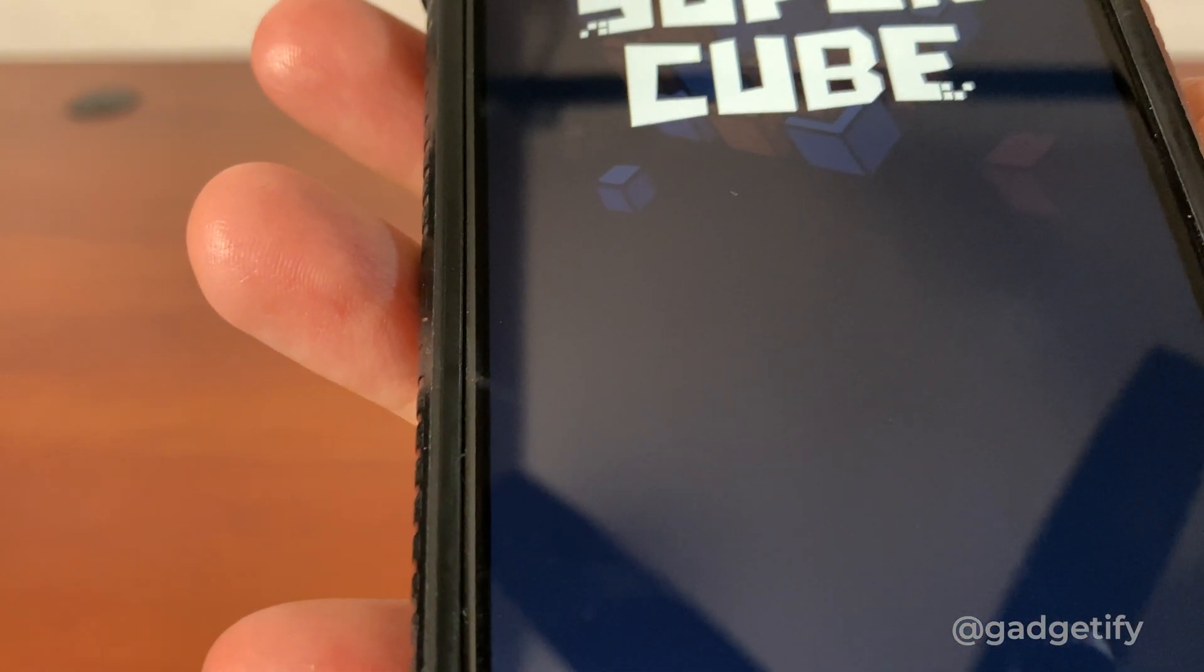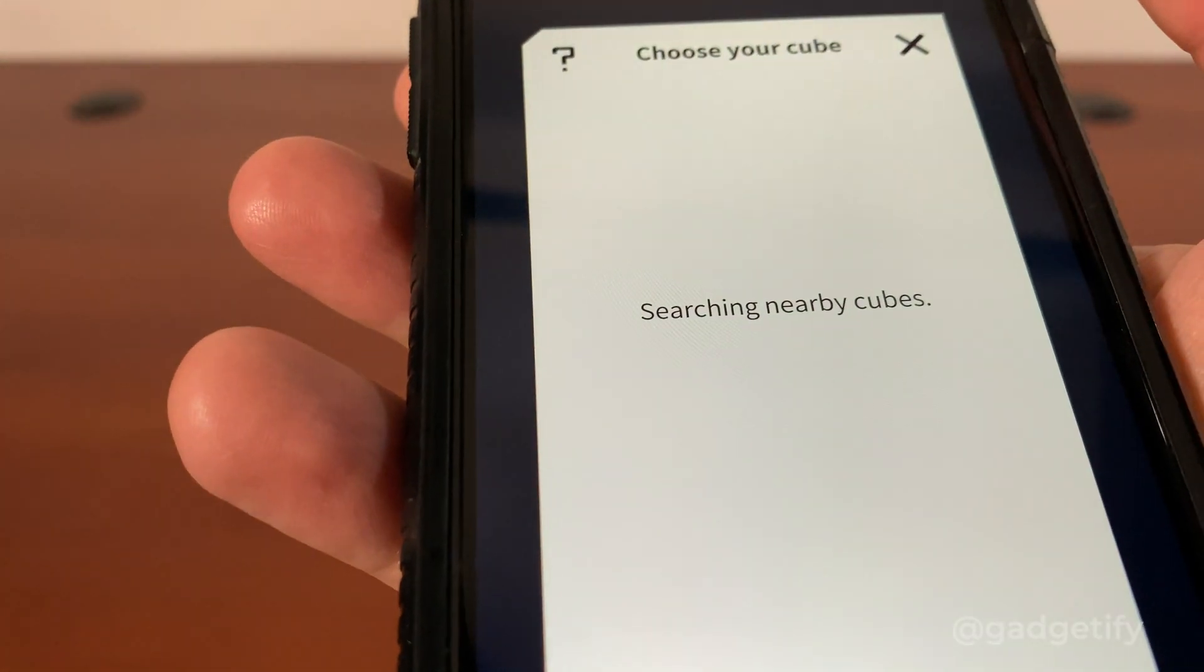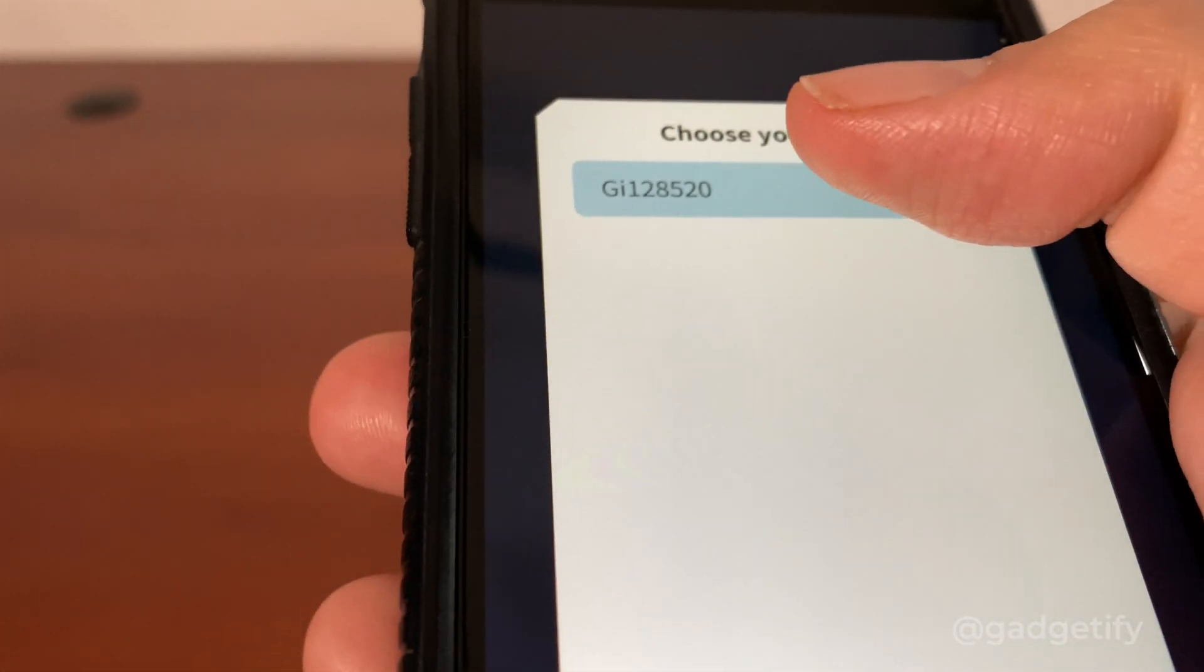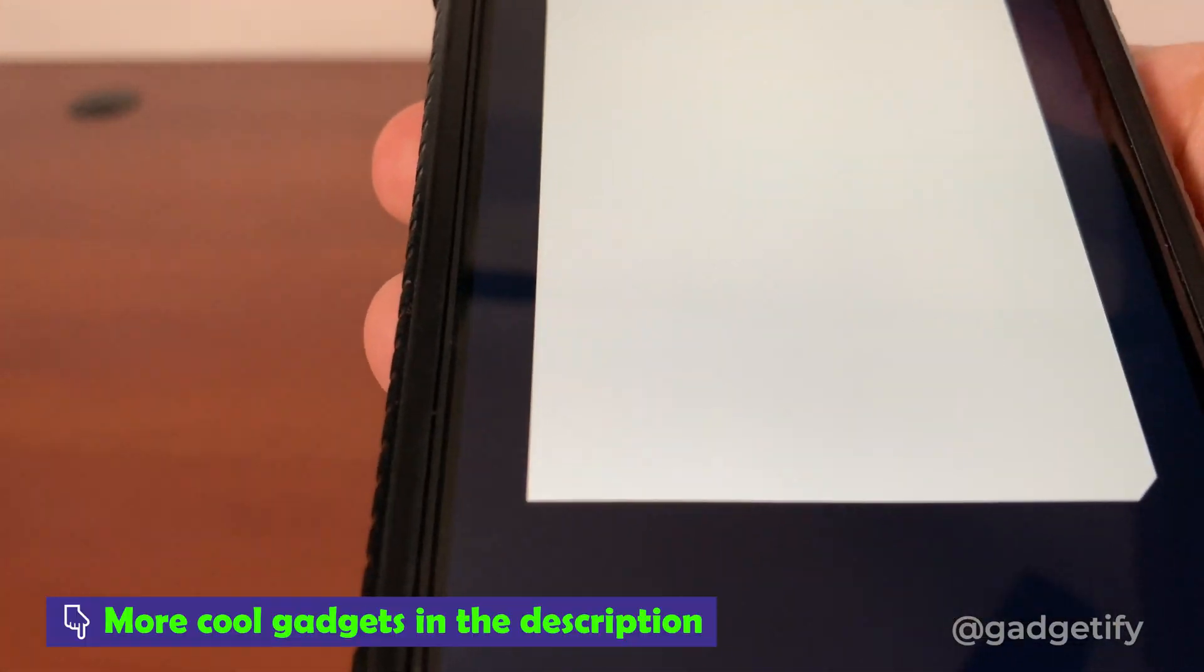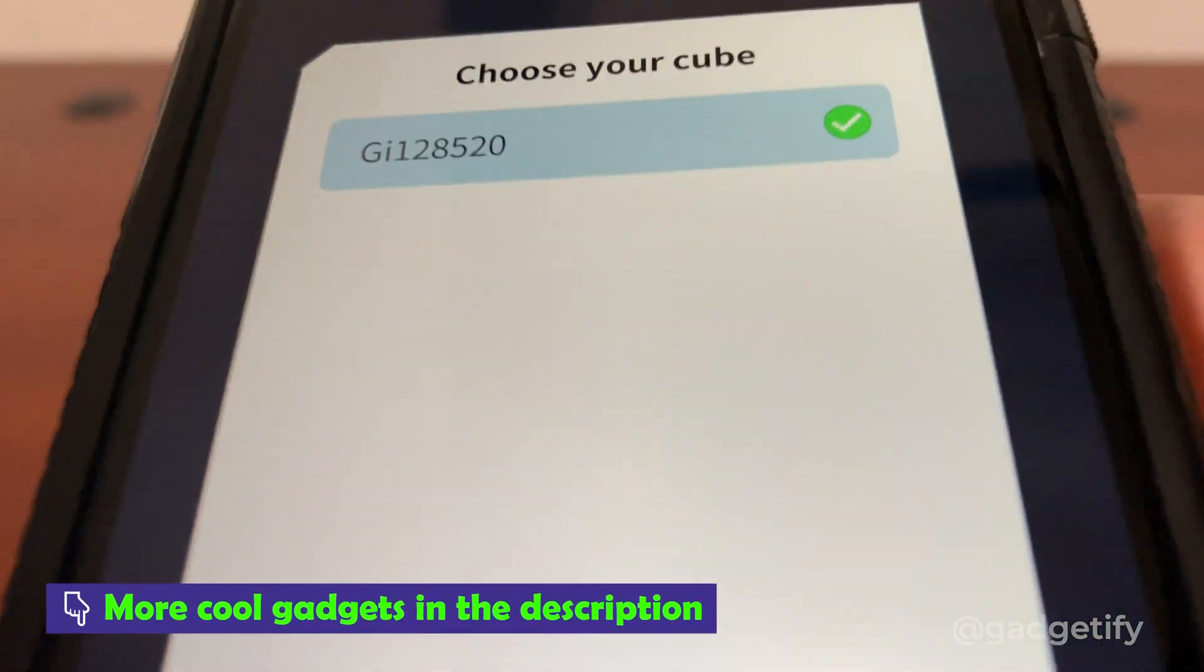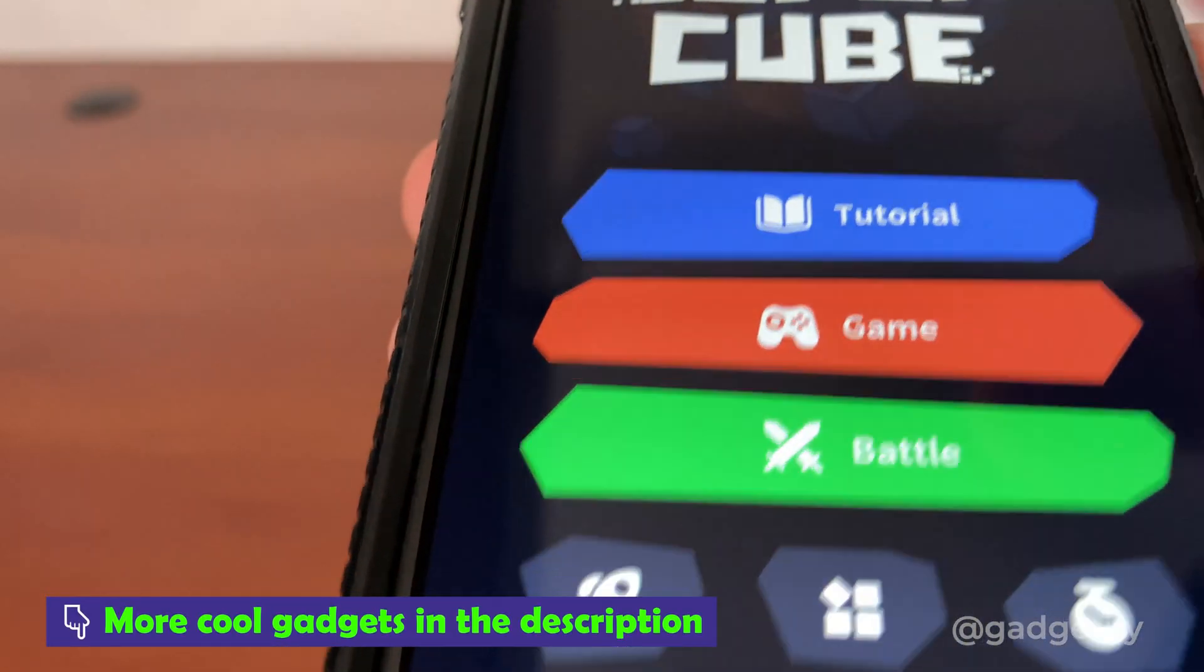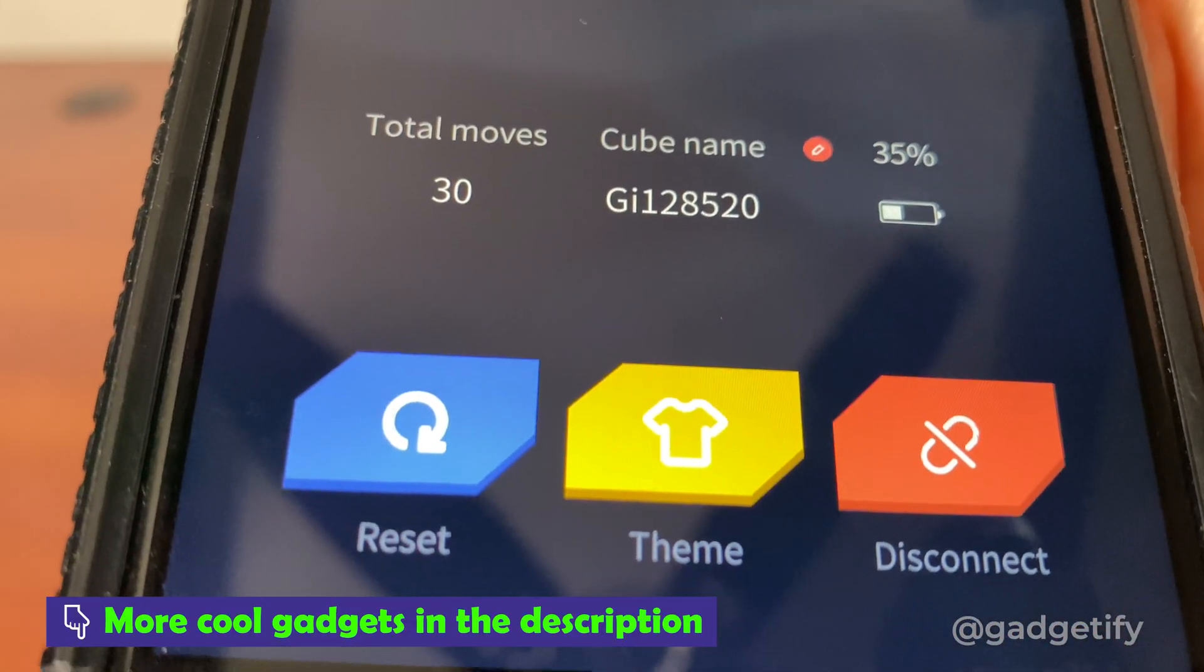Just go to the Supercube app. It will search for it. It will find it and it will let you know how much battery you have left. It will take a little bit of time to actually link it. You see the battery life there.